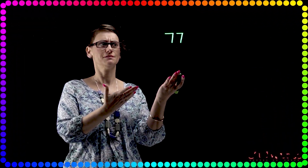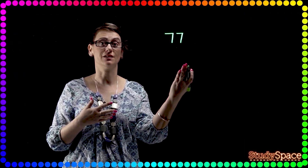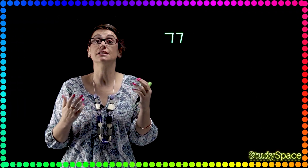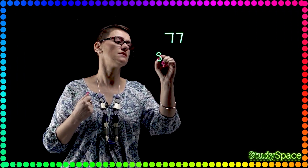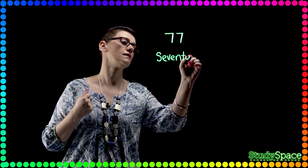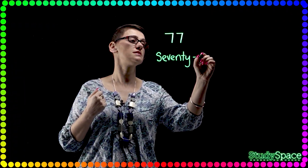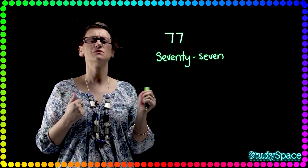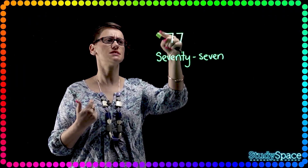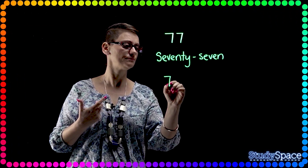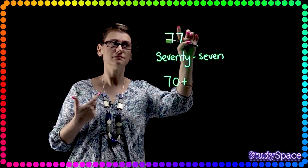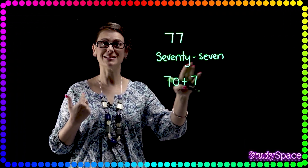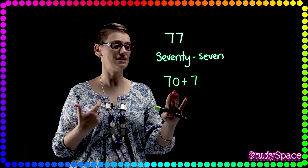So what's this number, boys and girls? How do we say this number? This number is 77. That's right. What does 77 look like written in words? We need to do the 70 and then the 7 — seventy-seven. So 77 written as words. Now we need to split it into its place value. What's the first seven represent? 70. And how many ones have we got? Seven. So 77 written as words, and 70 split into place values is 70 plus 7.